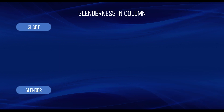By definition, a column can be differentiated as short or slender using the slenderness ratio. When a column is short, it means only the first order effects are dominant in the analysis and design. When a column is slender, it is subjected to second order effects as well as first order effects. Short columns are governed by first order effects only, while slender columns must account for both.